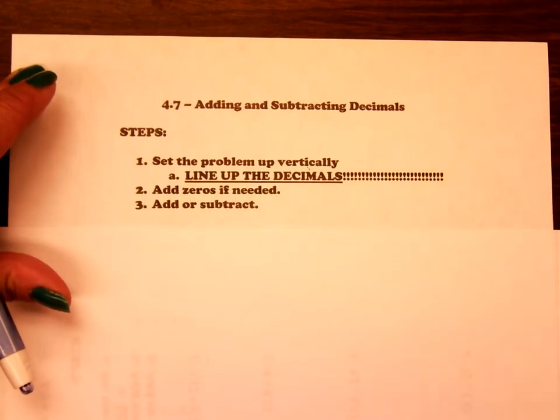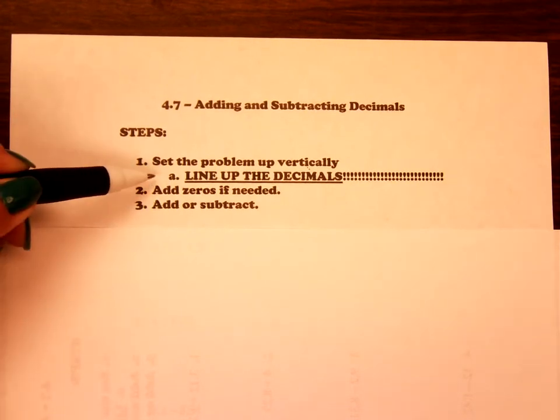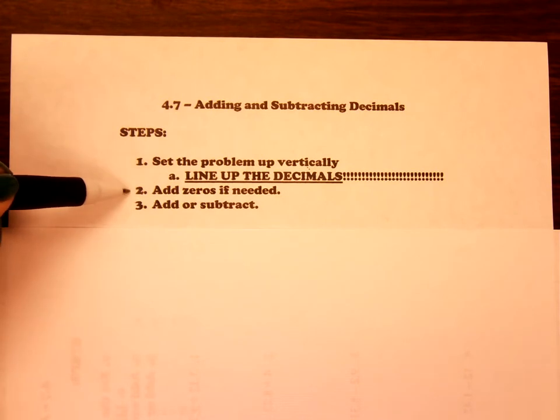So here's your steps for 4.7. Step one is to set the problem up vertically. Line up the decimals. It's really important that you remember to line up the decimals. Step two is add zeros if necessary, and step three is to add or subtract.